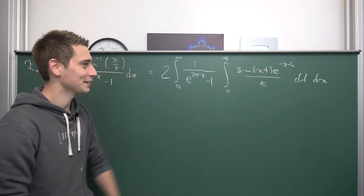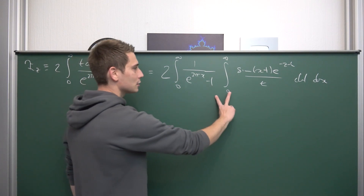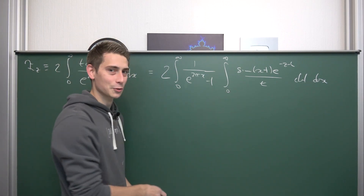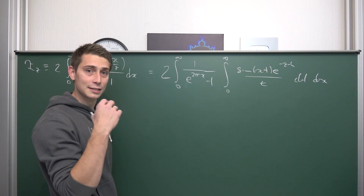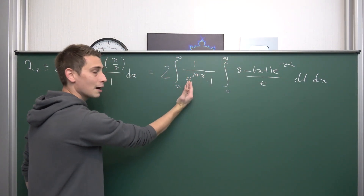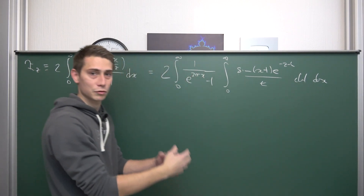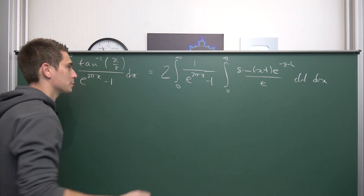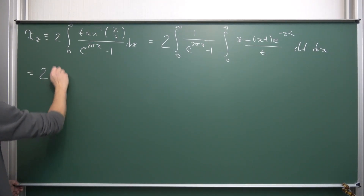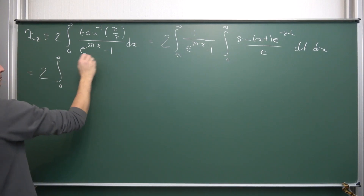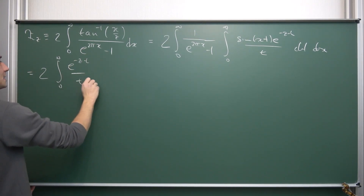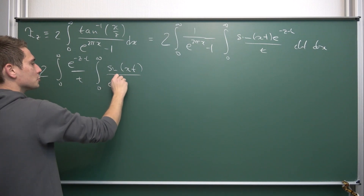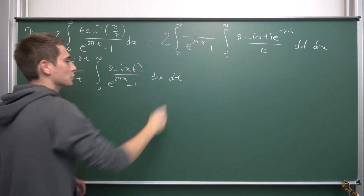There's way more luck involved in solving this thing. So now we're going to play physicist and interchange the order of integration — papa says so and hence it must work out. We interchange the order, and everything exclusively with respect to t — e^(−zt)/t — goes to the outer integral, while everything with respect to x goes to the inner integral. This gives us 2 times the integral from 0 to infinity of e^(−zt)/t times the integral from 0 to infinity of sin(xt) over (e^(2πx) − 1) dx, then dt.